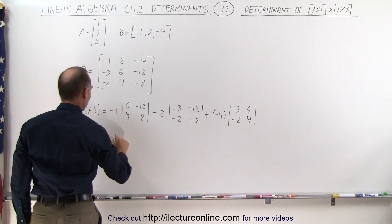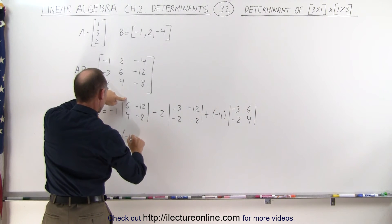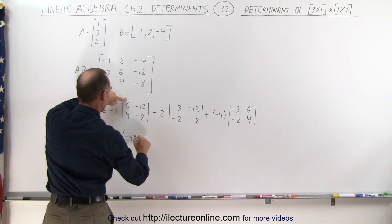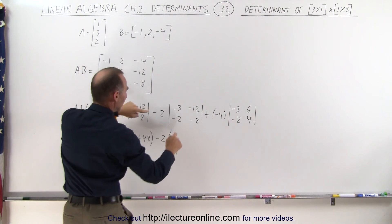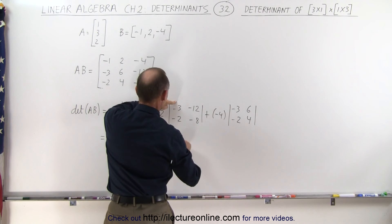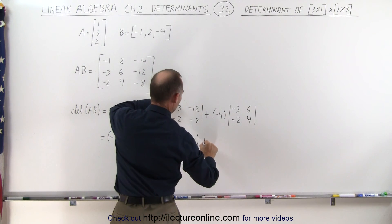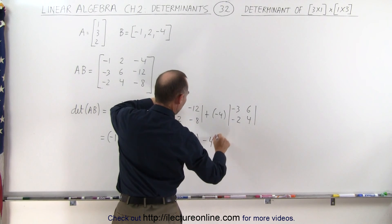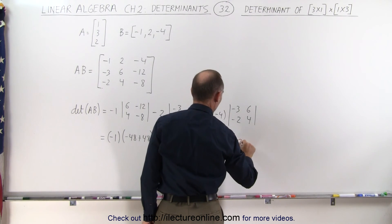This equals negative 1 times minus 48, minus times the minus that would be plus 48, minus 2 times here we get that's plus 24 minus 24, and finally minus 4 times here we get minus 12 minus minus 12 that's plus 12.